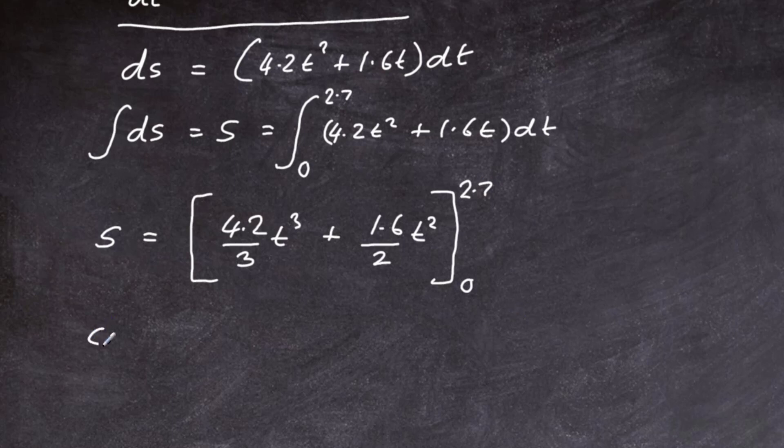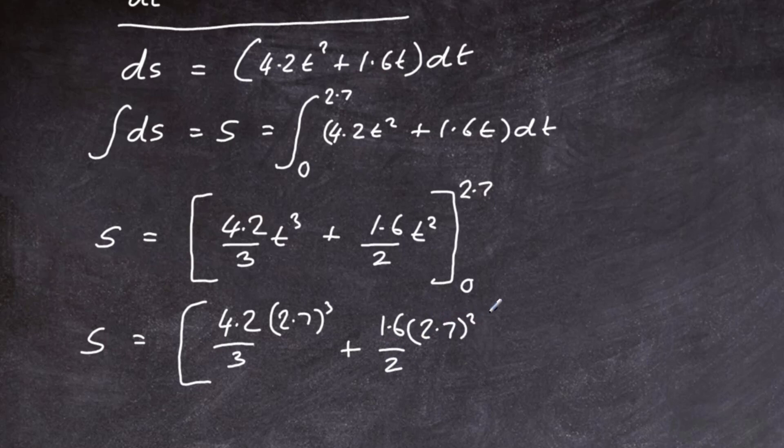So we just plug in our numbers. S would be 4.2 over 3 times 2.7 cubed plus 1.6 over 2 times 2.7 squared. That's the top limit, and subtracting the 0 limit gives us 0.